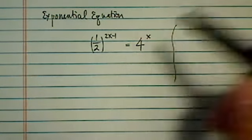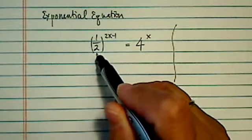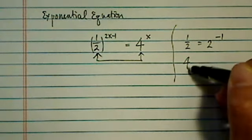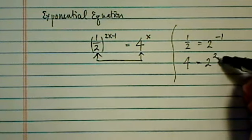We don't have to use logarithm if the bases are connected to each other. So 1/2 is equal to 2 to the minus 1. 4, of course, is equal to 2 squared.